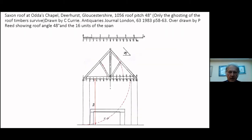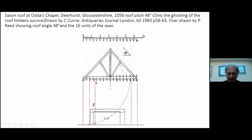More evidence: Odas Chapel in Deerhurst in Gloucestershire also has a pitch of 48 degrees, surveyed and identified by Curry, who published his findings in 1983. Drawing over the top shows the divisions of the tie beam and how the rafter length was found, and also how the struts were positioned using position seven. The height of the building was set out using 14 units, so the carpenter not only set out the roof but also set out the walls and gave the rod measurements to the stone masons before putting his roof on. This means the carpenter had the roof designed before the building started.